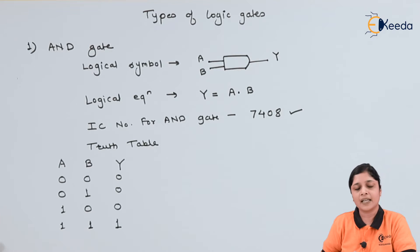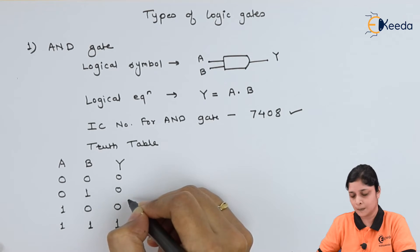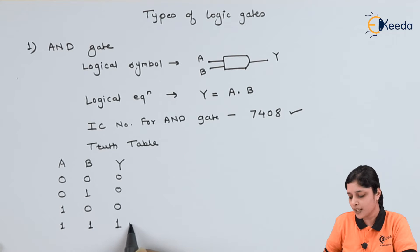So in AND gate if any of the input is 0, output you will get as logical low. So to get the output as high, both the inputs or you can say all the input to the system should be high. Then and then only you will achieve the high output.